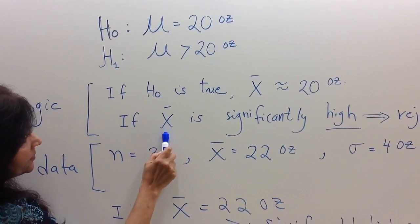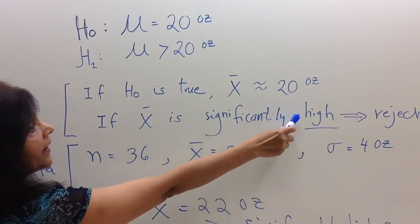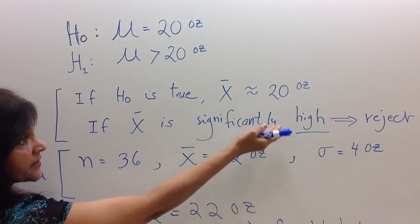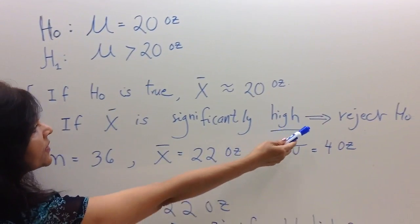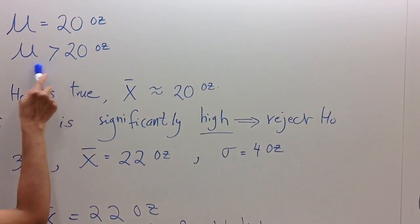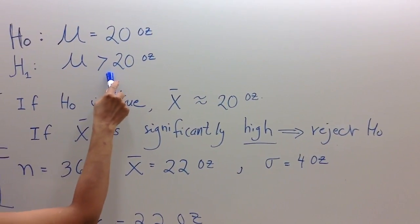But if sample mean is significantly high, higher than expected value of 20, then we will reject null hypothesis and we will establish the alternative.